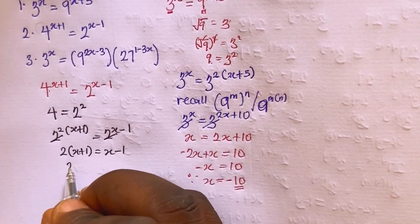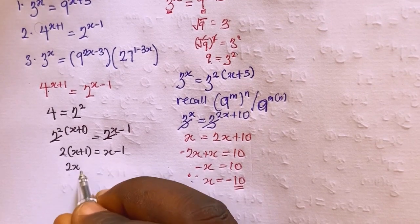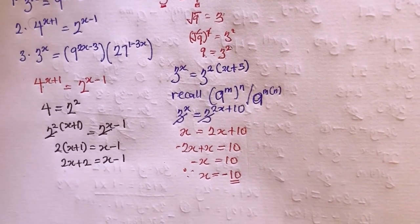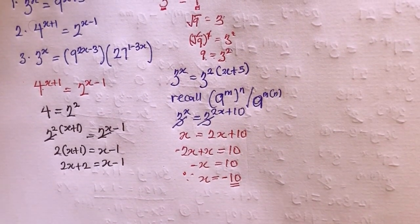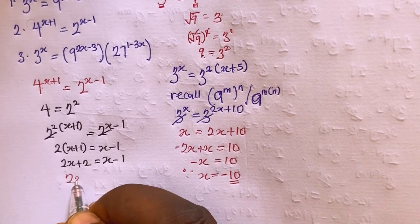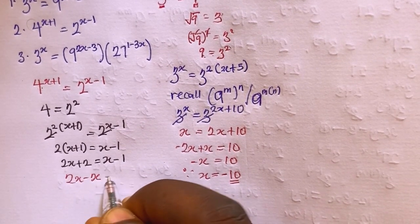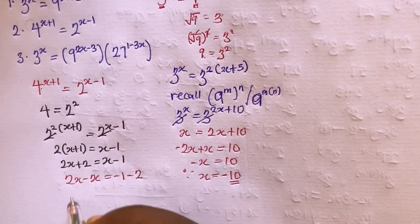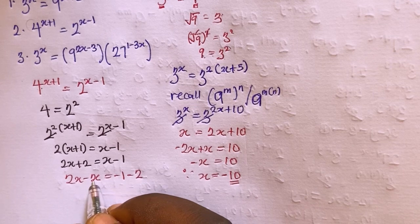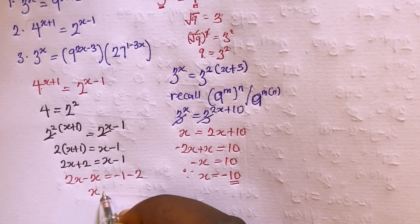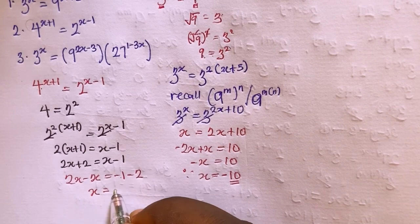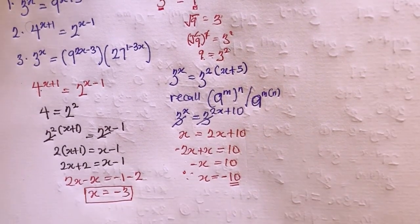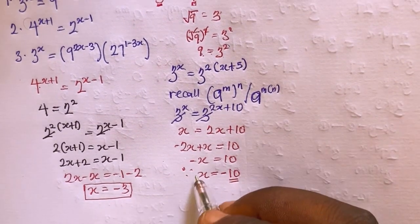Expanding the bracket gives 2x plus 2 equals x minus 1. Collecting like terms: 2x minus x equals minus 1 minus 2, so x equals minus 3. Therefore x equals minus 3 for the second problem.